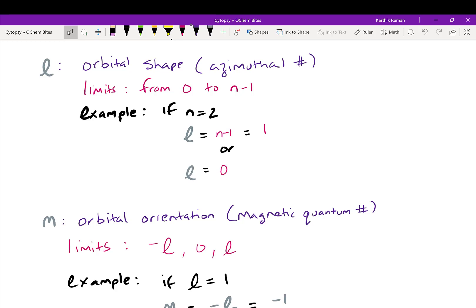Another quantum number is L. This tells you the orbital shape. Remember, orbitals tell you with 95% probability where is the electron going to be at any given time. And so the shape is very important. It tells you around the nucleus in what shape is this probability distribution. L is also called the azimuthal number, and L can go from 0 to n-1. Remember, n is the principal number.